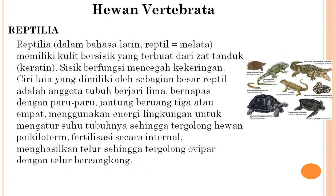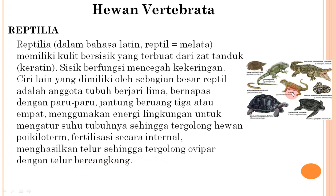Reptilia (dalam bahasa Latin berarti melata): memiliki kulit bersisik dari zat tanduk (keratin) yang berfungsi mencegah kekeringan. Ciri lain: anggota tubuh berjari lima, bernapas dengan paru-paru, jantung beruang 3 atau 4, menggunakan energi lingkungan untuk mengatur suhu tubuh sehingga tergolong poikiloterm. Pembuahan secara internal, menghasilkan telur sehingga tergolong ovipar dengan telur bercangkang.